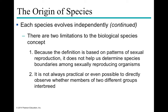There are two limitations to the original biological species concept. First, the definition is based on patterns of sexual reproduction, so it doesn't help with asexually reproducing species. It also doesn't always determine boundaries between organisms that do interbreed but still have differences between them. And it's not always practical to determine whether species are able to interbreed, since the potential for interbreeding isn't necessarily the same as actually interbreeding.